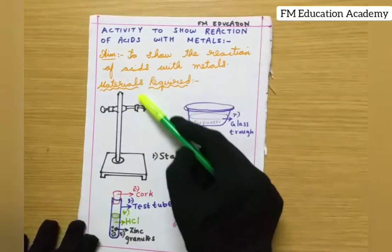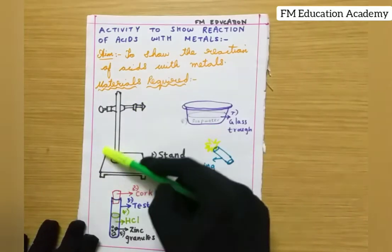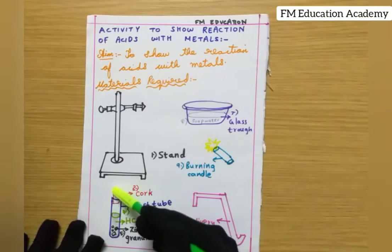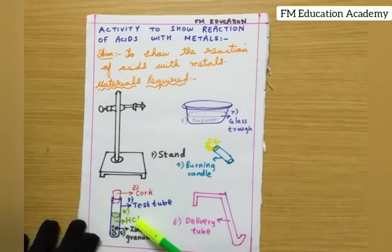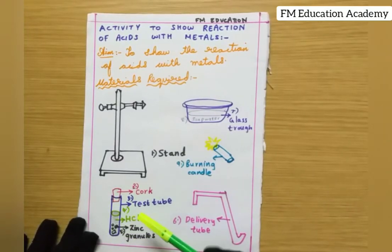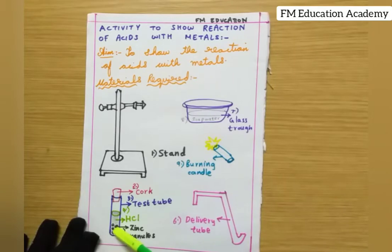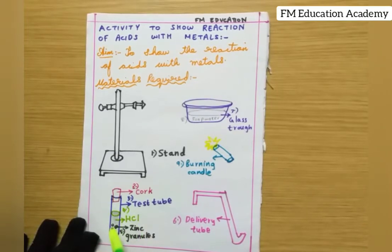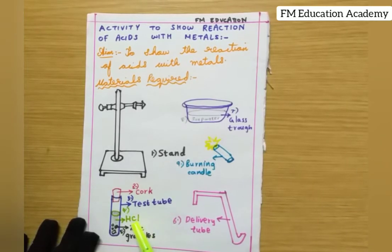The materials required are: a stand with a holder for fixing a test tube, a cork to cap the test tube, the test tube itself, and HCl as our acid. Inside the test tube we will take HCl solution and add zinc granules — zinc pieces — which are our metal. So we are mixing acid and metal inside the test tube.